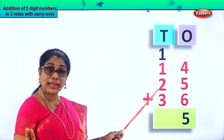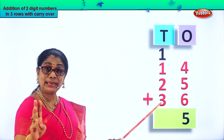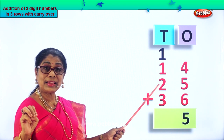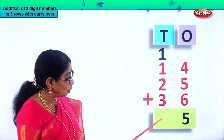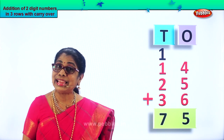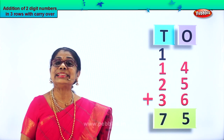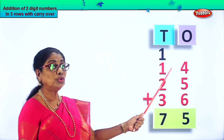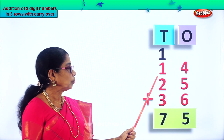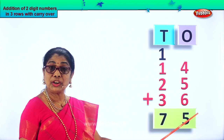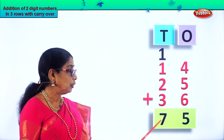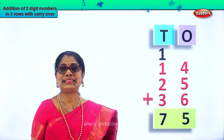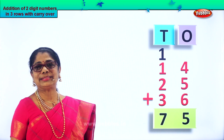Two tens plus two tens: three, four tens. Four tens plus three tens: five, six, seven tens. So we put down the seven tens in the tens place. So fourteen plus twenty-five plus thirty-six equals seventy-five — that is seven tens and five ones.